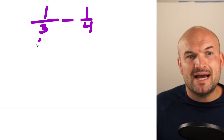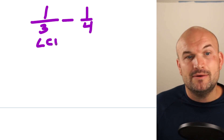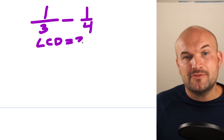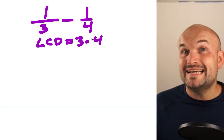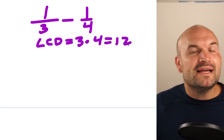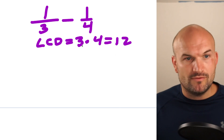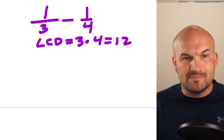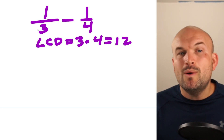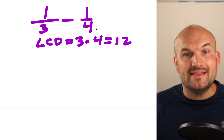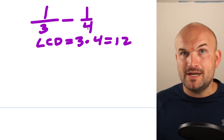So in this case, my LCD is going to be three times four. Three times four equals 12. What I want to do is obtain 12 in both denominators. Just like when I reduced fractions by dividing the same number in the top and the bottom to produce an equivalent fraction, now what we're doing is producing a fraction that has a denominator of 12 but still has the same value — so instead of dividing, we're multiplying.